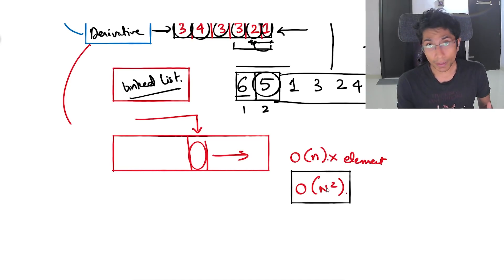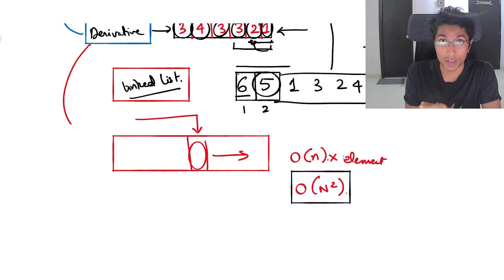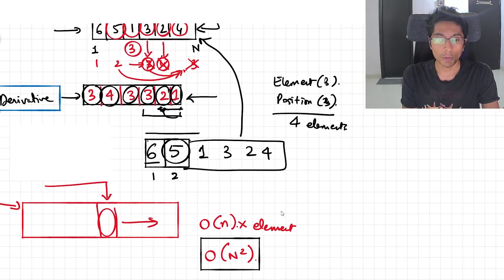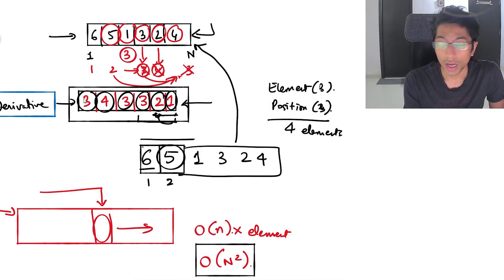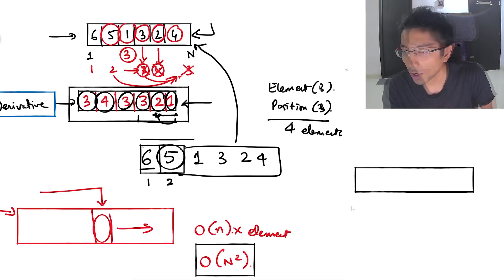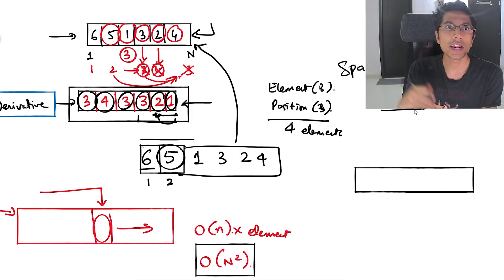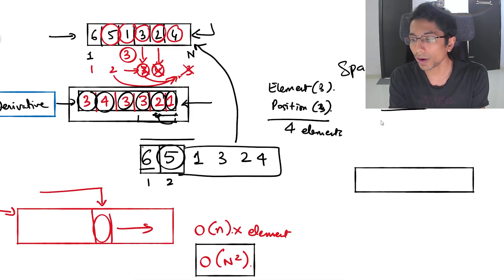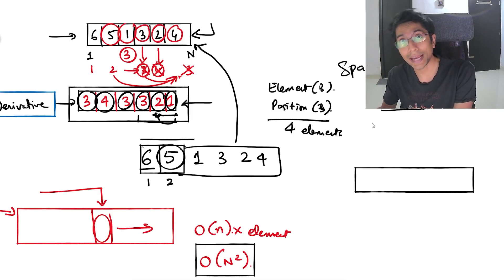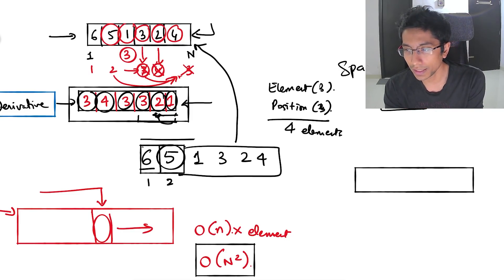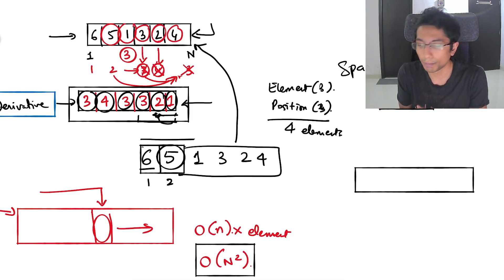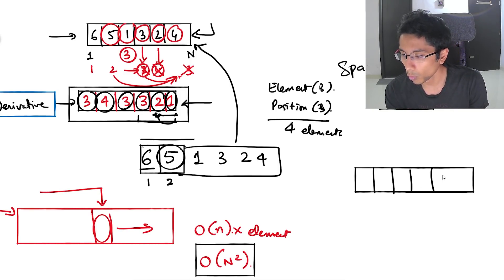The second part of the question is whether we can reconstruct this array faster if we use auxiliary space. We are given the derivative, and we can use whatever space complexity we like. In general, if you're using more than O(n) space you also need more than O(n) time to allocate it. Let's keep to O(n) space — use temporary arrays and try to speed this up by reconstructing with a fresh array.